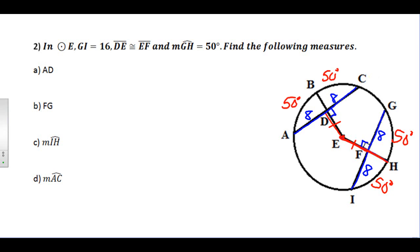We want to find the following measures. What's AD? Well, we figured that out here already. That's 8. What's FG? FG is also 8. What's the measure of arc IH? We just did that, and that's 50 degrees. And what's the measure of arc AC? Well, two 50 degree arcs together would be 100.